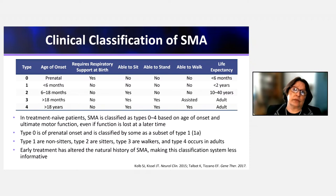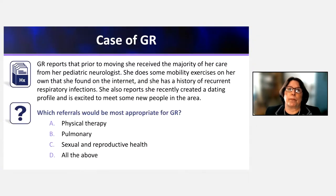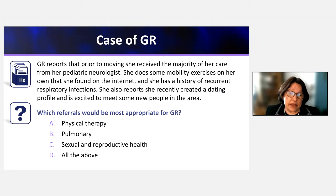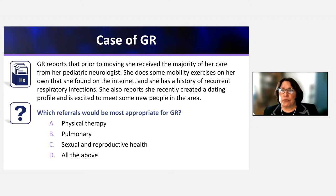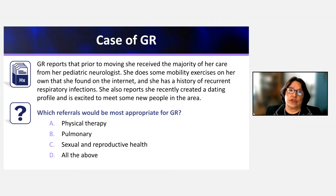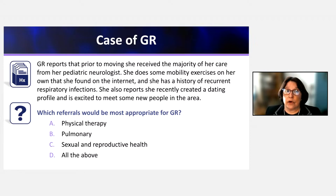Continuing with GR: she reports that prior to moving, she received the majority of her care from her pediatric neurologist. She performs mobility exercises she found on the internet and has a history of recurrent respiratory infections. She also reports recently creating a dating profile and is excited to meet new people. The question is: what are the most appropriate referrals for GR? Options include physical therapy, pulmonology, sexual and reproductive health, or all of the above.